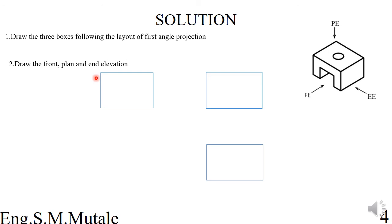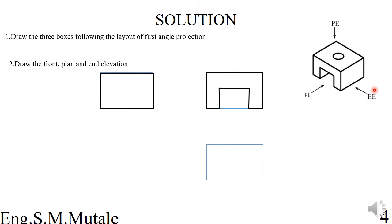Step two is to draw the front, plan, and end elevations. Viewing the 3D object from the front, you draw what you can see in the front elevation box. Viewing from the end elevation side, you draw that box. And viewing from the top for the plan elevation, you draw what you see from above.